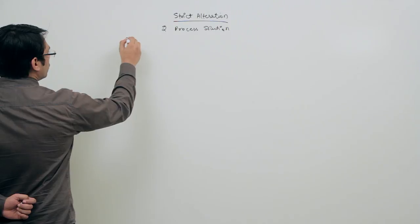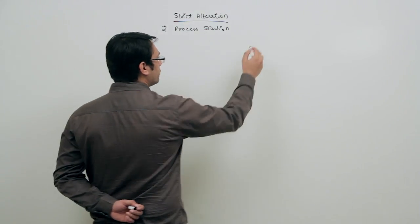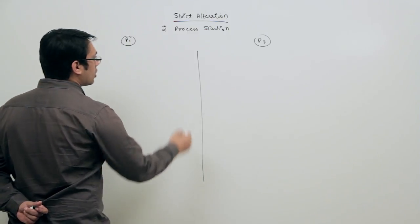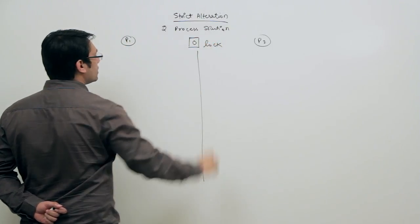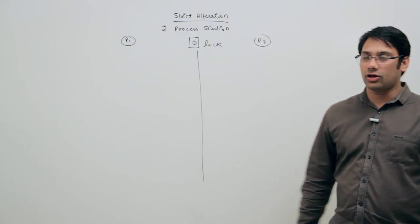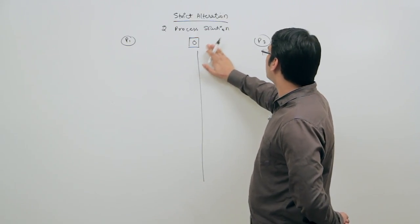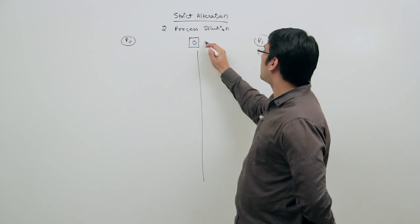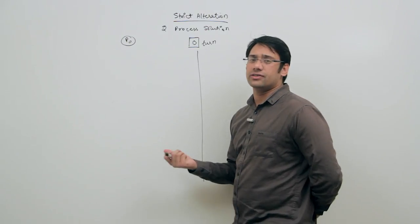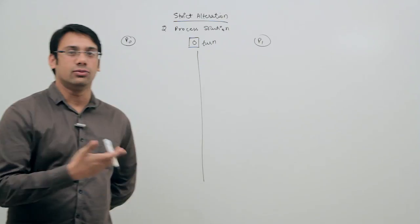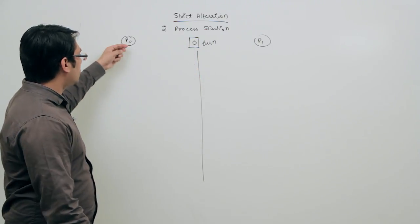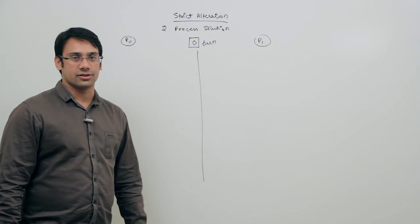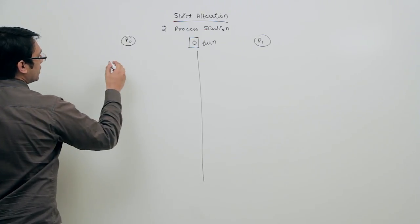For the two processes we are going to use two different codes. This code is for process P0 and this code is for process P1, and there will be a shared variable called the turn variable. The initial value of the turn variable is 0. When turn equals 0, it is the turn of P0 and P0 can enter the critical section. When turn equals 1, P1 can enter the critical section.